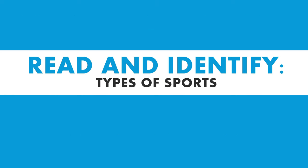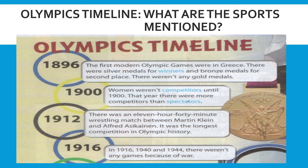Without further ado, let us move on to the first activity of our lesson today, which is to read and identify the types of sports. The text we are going to read today is about the Olympics timeline. While we are reading, I hope you can identify how many sports and what sports are mentioned in the text. Now let's start to read this together.